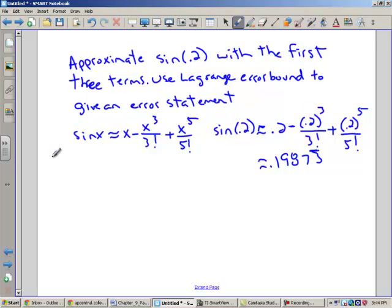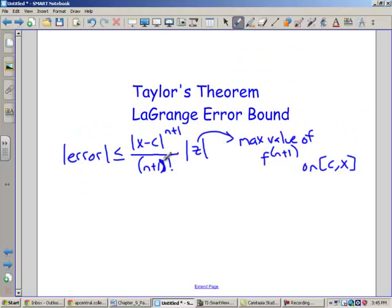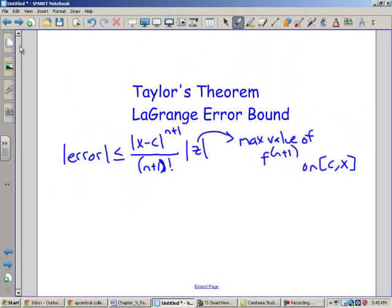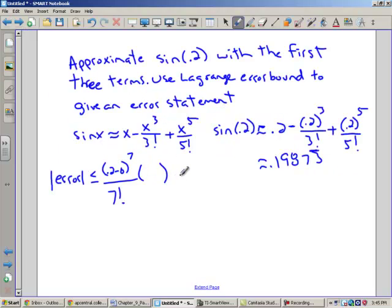So this says we'll use the Lagrange error bound to give an error statement. The Lagrange error bound says that my absolute value of my error is less than or equal to... Go back and look at that again. This is like the next term, the n plus 1. So I've got x minus c to the n plus 1. Now let's just see. The next term here would have been to the 7th, because it would have been to the 7th power over 7 factorial. And what are we going to use here? Well, what we're going to use here are the x and the c. The c is the center and the x is where we're trying to approximate it.